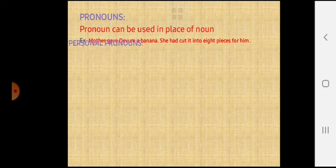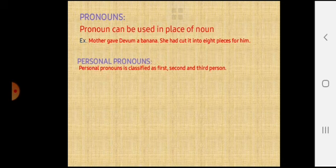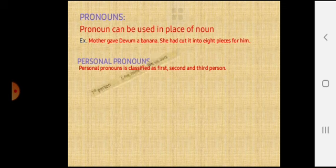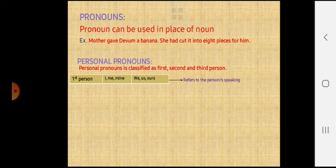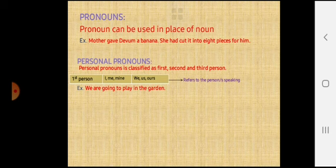Now we will see personal pronouns. Personal pronouns is classified as first, second and third person. First person refers to the person speaking. The words include I, me, we, us, are the first person pronouns. For example, we are going to play in the garden. In this sentence, we is the first person pronoun.